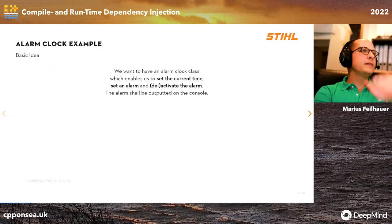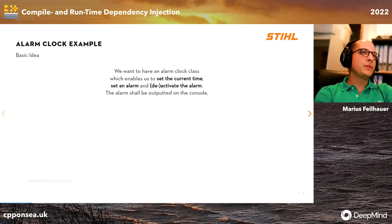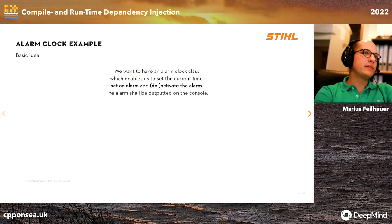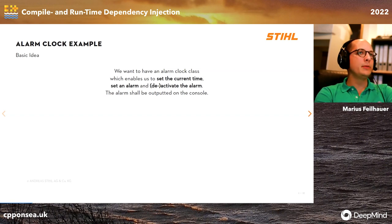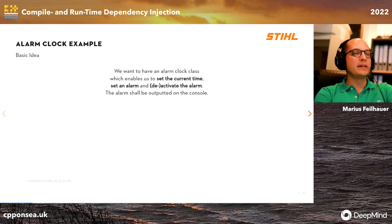The basic idea of the alarm clock example: we want an alarm clock class that enables us to set the current time, set an alarm, and deactivate the alarm. The alarm should be outputted to the console. That's the basic idea we'll use throughout this talk — it's a pretty simple implementation.